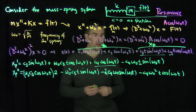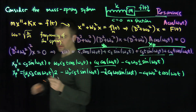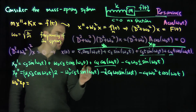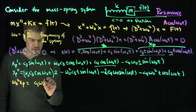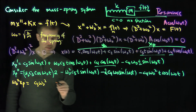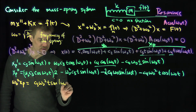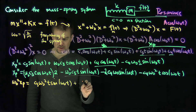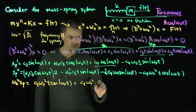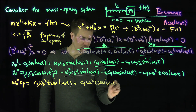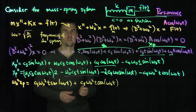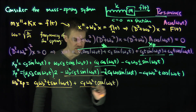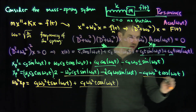Computing ω₀²x_p: that gives c₃ω₀²t sine ω₀t plus c₄ω₀²t cosine ω₀t. When we add x_p double prime plus ω₀²x_p, the c₃ω₀²t sine terms cancel with each other, and the c₄ω₀²t cosine terms cancel with each other.